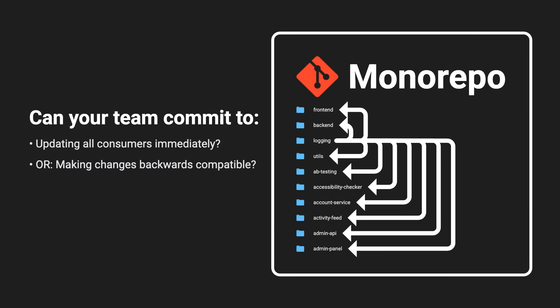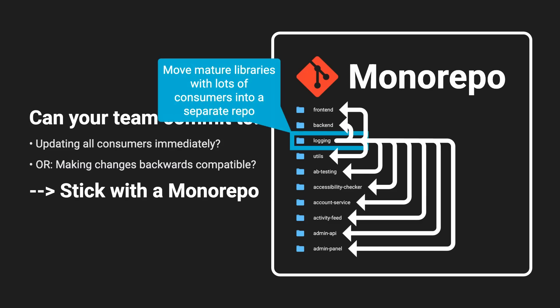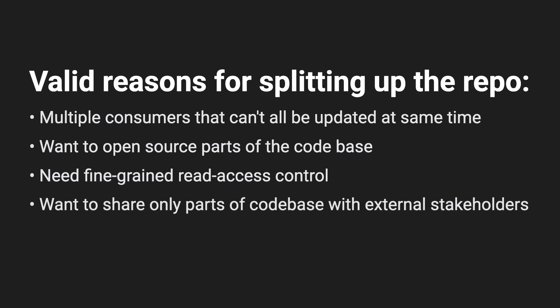If the answer is yes, then stick with a monorepo. If this approach doesn't work for you for any of the reasons I mentioned, I don't see a problem with splitting out that single library into its own repo and integrating it via package manager or submodules. This way, you're making a conscious decision to defer system integration to a later time. Because of that, I only recommend doing this for relatively mature libraries with lots of consumers, where the library is probably owned and managed by a separate team. Personally, I don't believe in splitting up your repo prematurely — only once a specific problem emerges that can be solved easily by moving that module into its own repo.